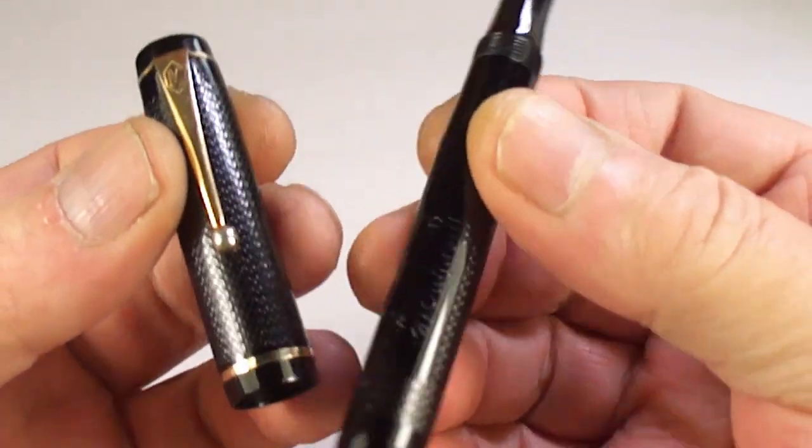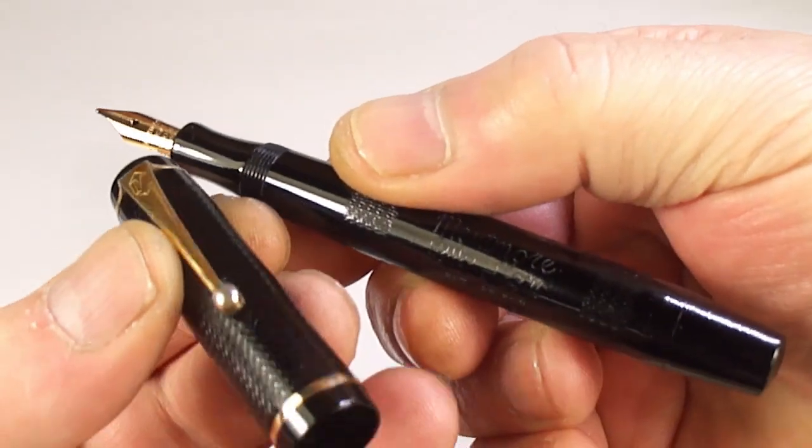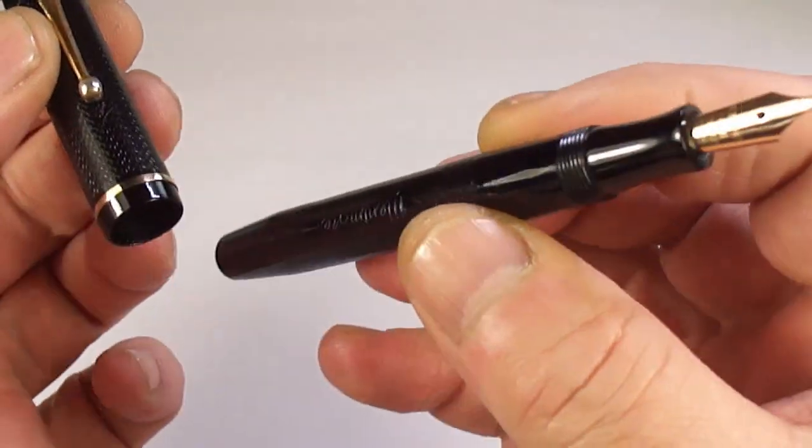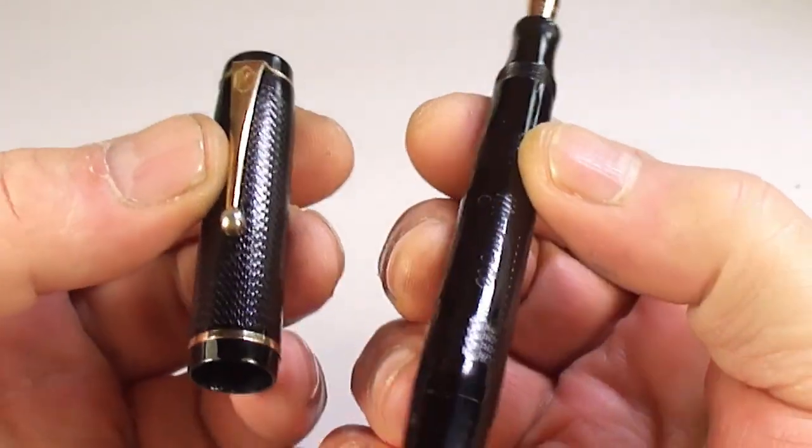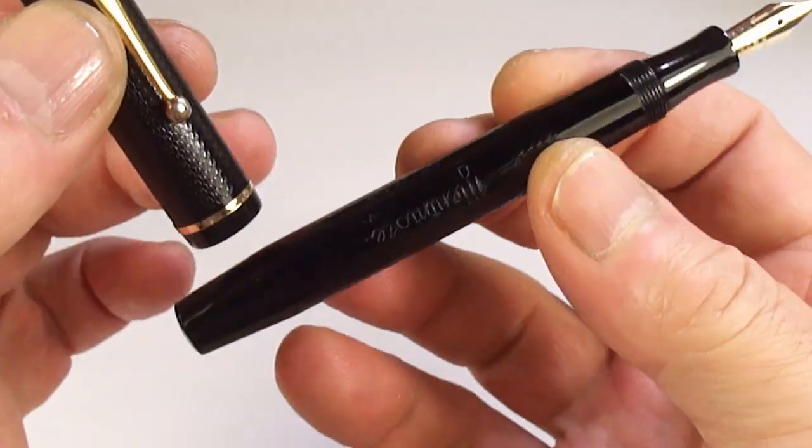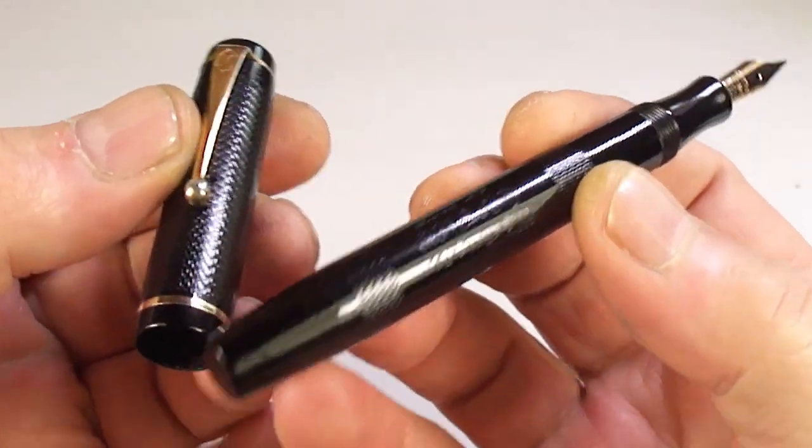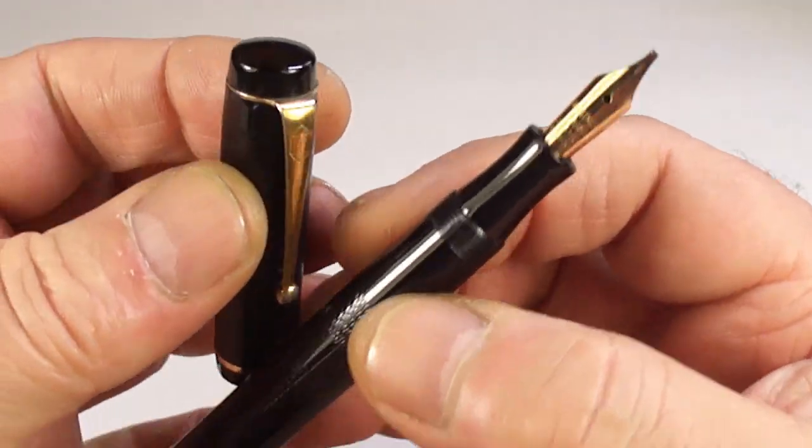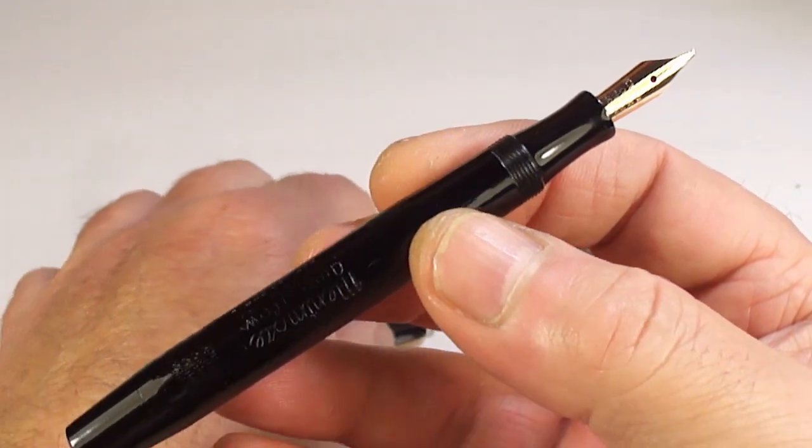So there's the cap off. Let's give you a couple of different angles of the pen. As I said, it's been fully disassembled, fully clean, new sack installed. In fact, we've actually put a new pressure bar inside as well because, believe it or not, for some reason, there was no bar originally inside.